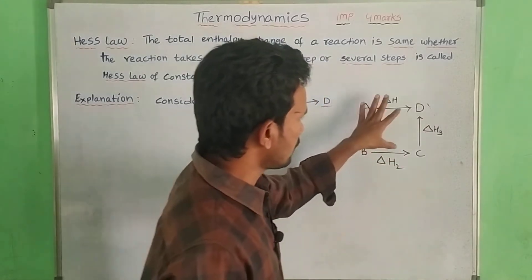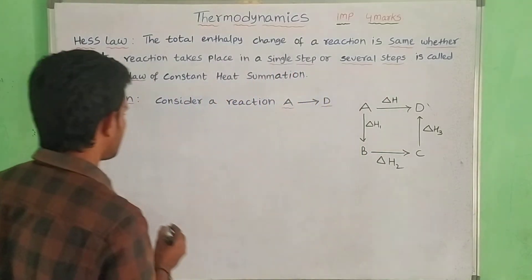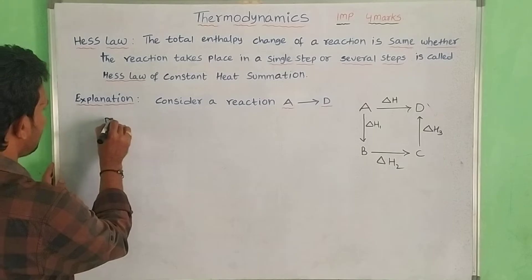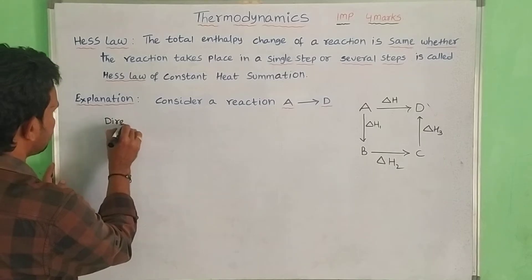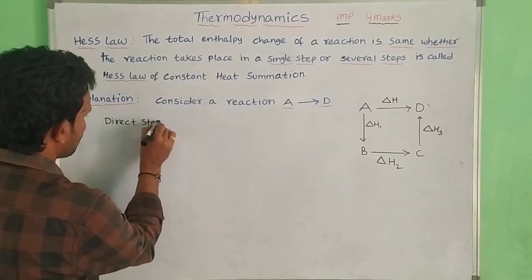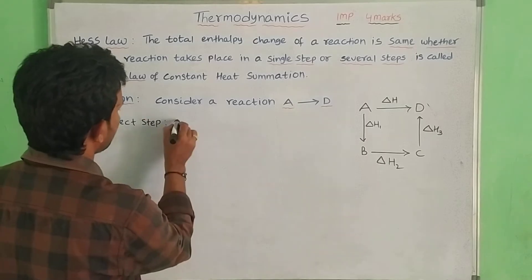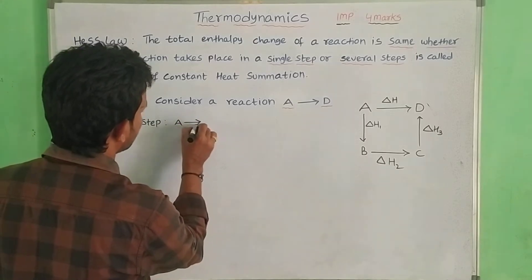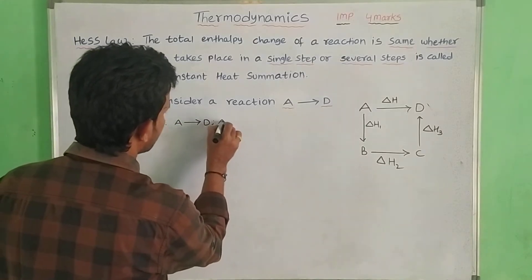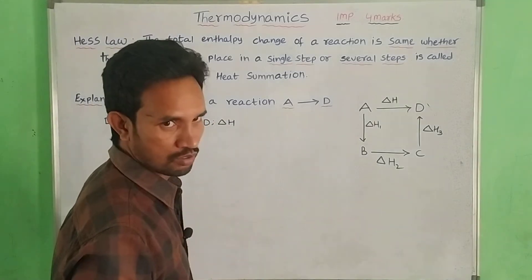So, according to Hess's Law, delta H enthalpy equals direct step 1 plus direct step 2, A2D. So delta H equal to enthalpy equal to delta H are lockstep.